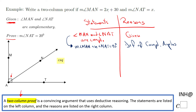That is the definition of complementary angles. Now I'm going to replace these two angle measures with the given expressions: 2x plus 30 for angle MAN, and just x for the measure of angle NAT, equals 90. This is nothing other than the substitution property of equality.